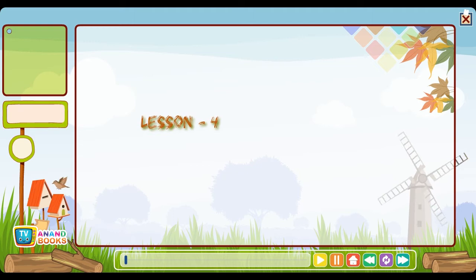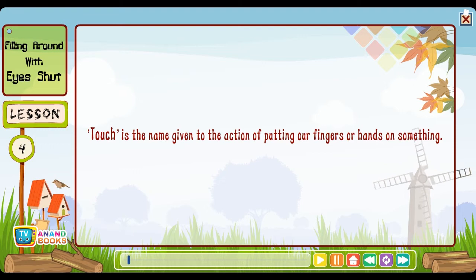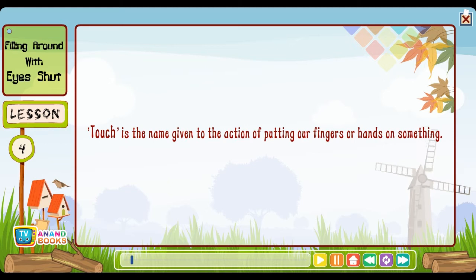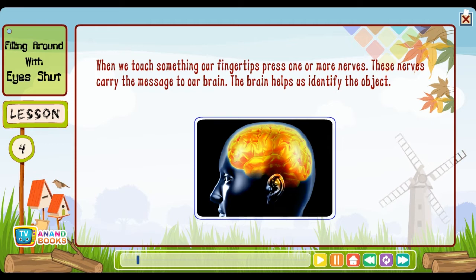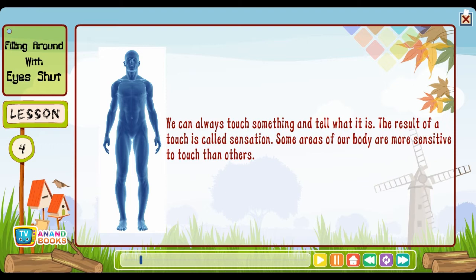Lesson four: Feeling around with eyes shut. Touch is the name given to the action of putting your fingers or hands on something. When we touch something, our fingertips press one or more nerves. These nerves carry the message to our brain. The brain helps us identify the object. We can always touch something and tell what it is. The result of a touch is called sensation.